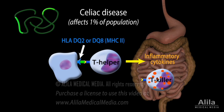Activated T helper cells release inflammatory cytokines and attract cytotoxic T cells to the small intestine. This results in inflammation of the mucosa, villus atrophy, and increased gut permeability. Common gastrointestinal symptoms include bloating and abnormal bowel habits.